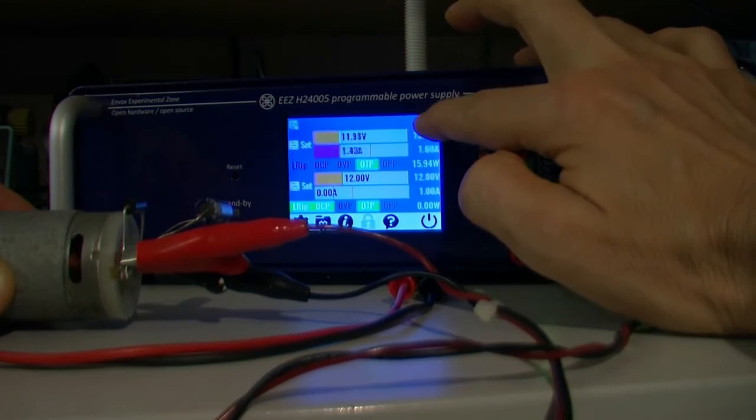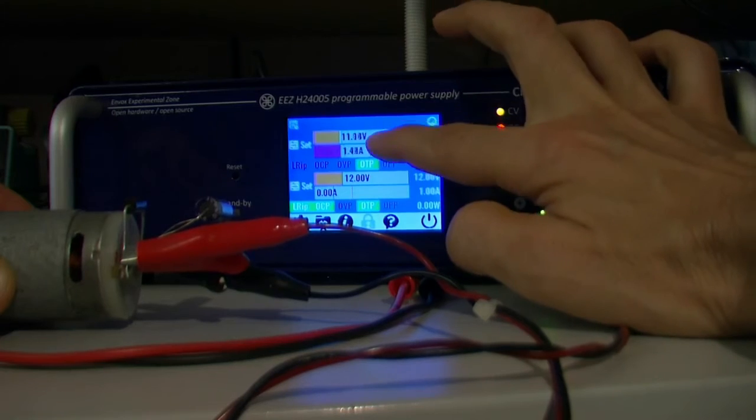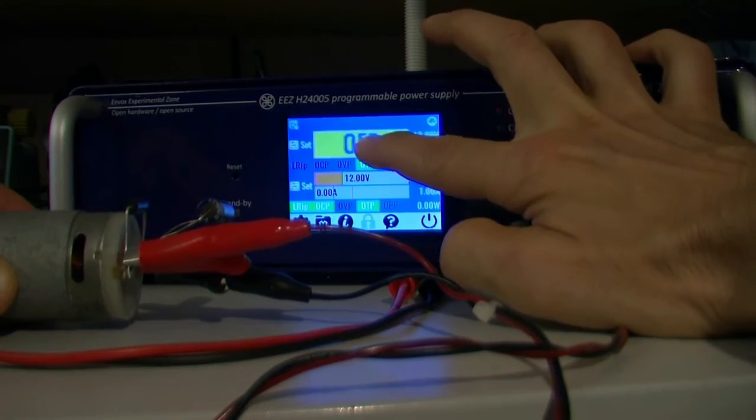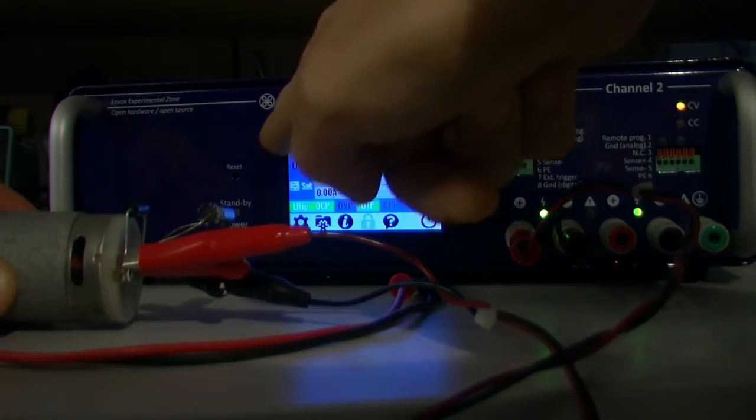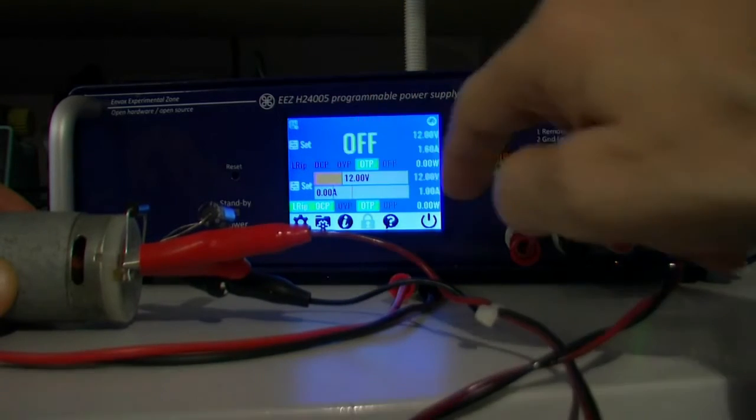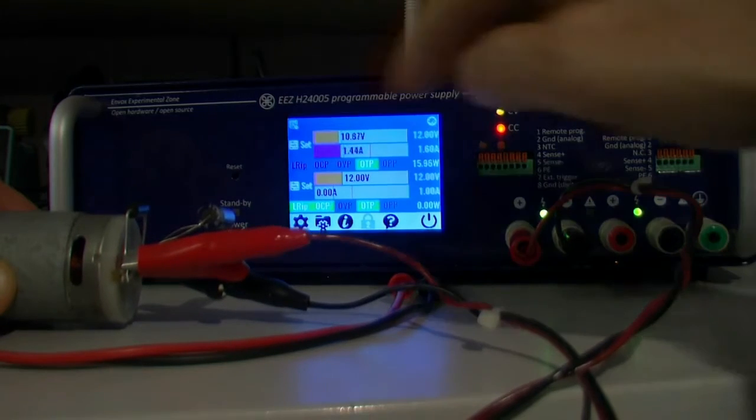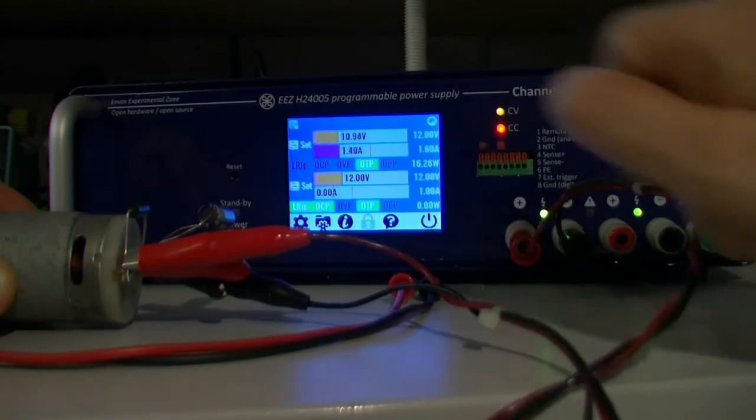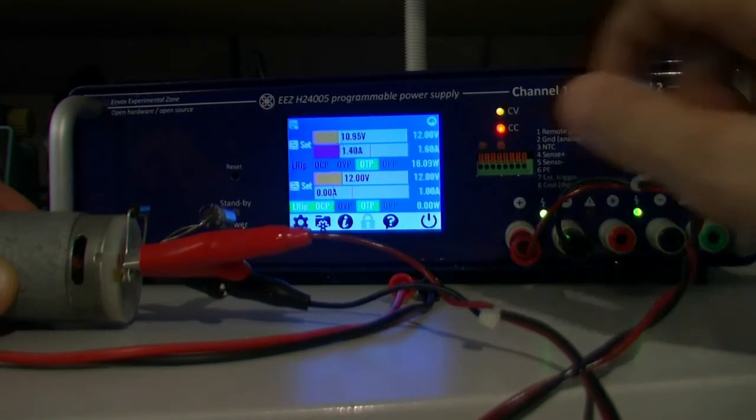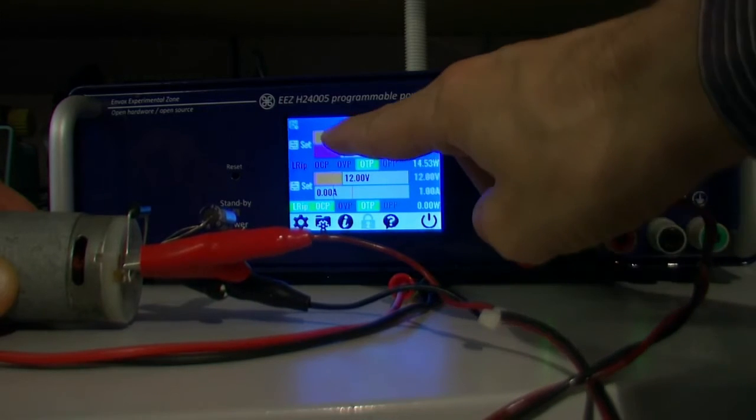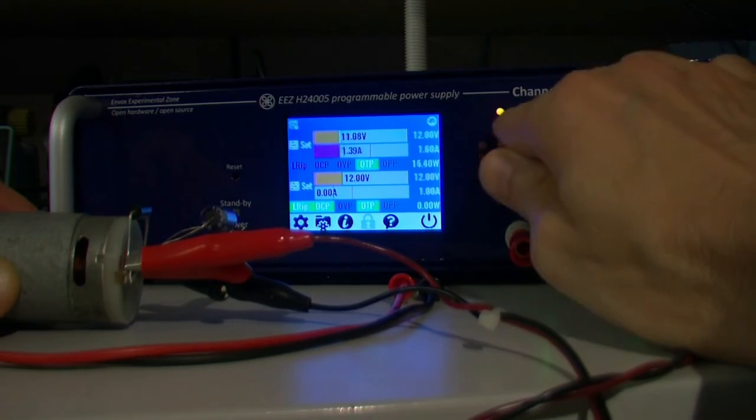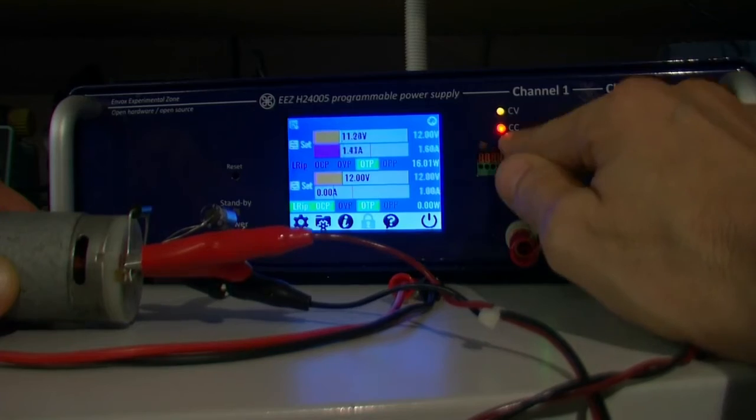Okay, so this is much easier to see on this display, especially at the start, than on the digital presentation. The red indicator shows that it's in unregulated mode when it's not in constant current or constant voltage.